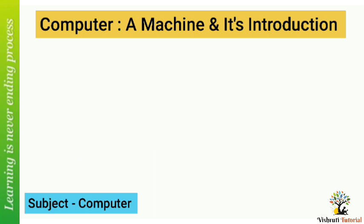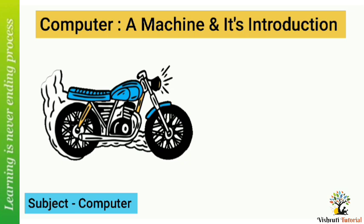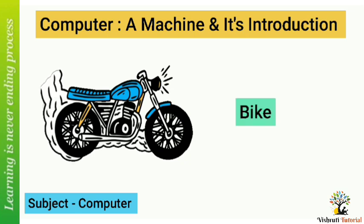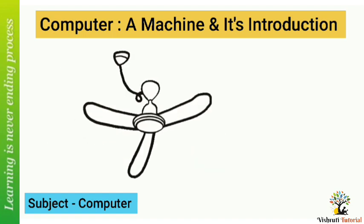Now see, what is this? This is a bike. It is used for traveling. Now see, what is this? Yes, this is a fan. A fan gives us air.